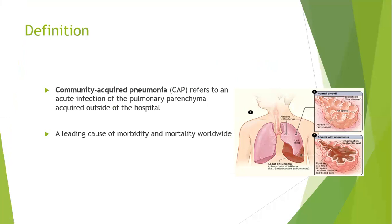Community-acquired pneumonia, by definition, refers to an acute infection of the parenchyma of the lungs that occurs outside of the hospital — that is, acquired in the community. It is a leading cause of morbidity and mortality worldwide, especially in the elderly age group. Basically, what happens in pneumonia is that you acquire the pathogen through droplet or aerosol, and it travels down into your lung parenchyma, as shown here in the diagram to the right, where it causes an inflammatory reaction in the alveoli.